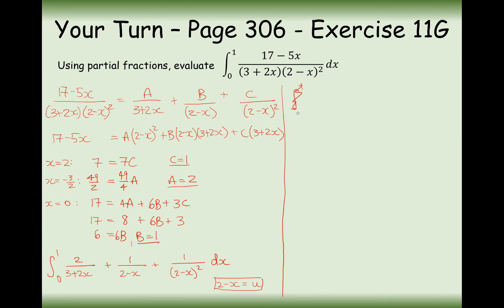Integrating the first term: the top is the differential of the bottom, so that's a perfect ln integration. For the second term, the top is not the differential of the bottom — we'd like a minus 1 on top. We can't create minuses out of thin air, so we balance it with a negative at the front, giving minus ln(2 minus x).